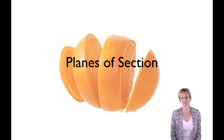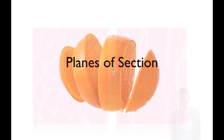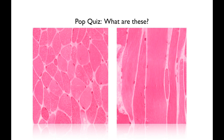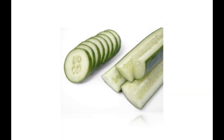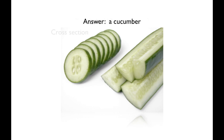Now, planes of section and how we slice and dice things. Here's a little pop quiz: what are these? It's actually a trick question because they're two images of the same thing. Why do they look so different? This is a question my students have all the time, especially when we jump into histology. The reason is they're cut in different planes. Here's another example — what are these? Hopefully you recognize it: it's a cucumber, but in two different sections.